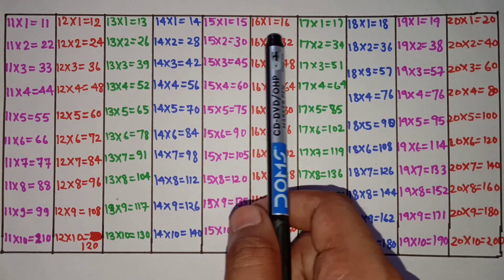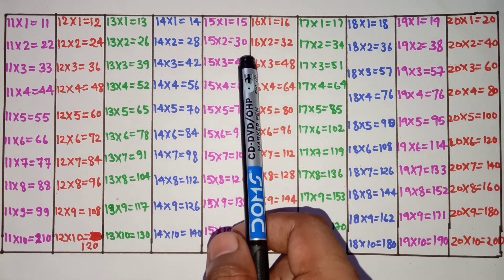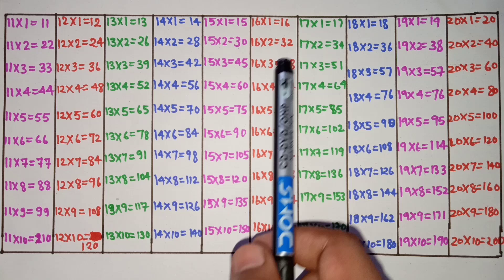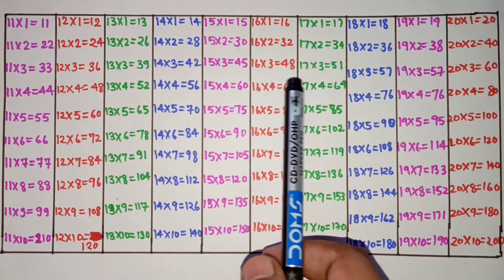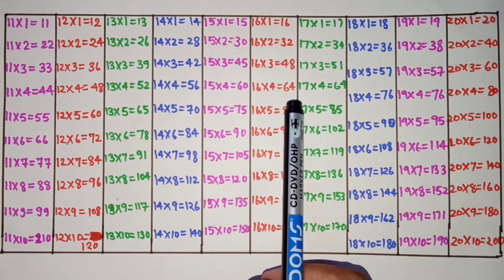16 ones are 16, 16 twos are 32, 16 threes are 48, 16 fours are 64.